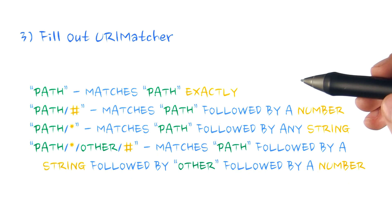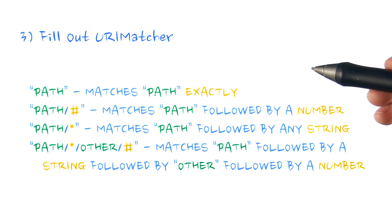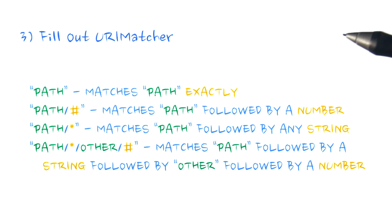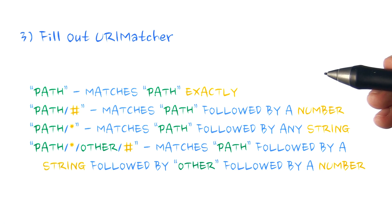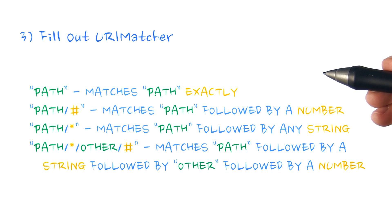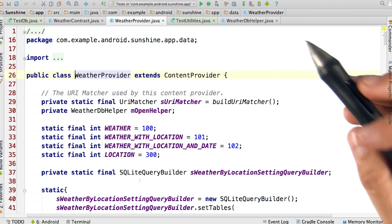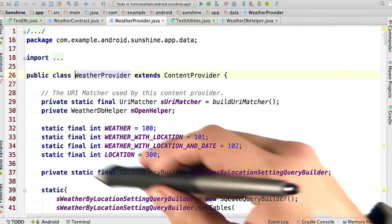Content providers implement functionality based upon URIs passed to them. Our content provider will implement four types of URIs. Each one of these URIs will be used to execute different types of operations against the underlying SQLite databases. For ease of implementation, content providers typically tie each URI type internally to an integer constant. These integer constants have already been added to the provided weather provider class.